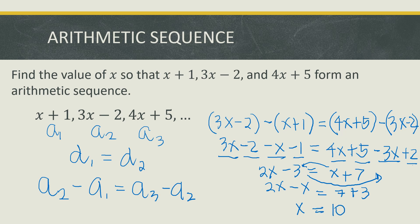Transposing positive x to the other side gives 2x minus x, and transposing negative 3 to the other side gives 7 plus 3. So 2x minus x is x, and 7 plus 3 is 10. Therefore, x equals 10. Substituting: the first term is 10 plus 1, which is 11; the second term is 3 times 10 minus 2, which is 28; and the third term is 4 times 10 plus 5, which is 45.